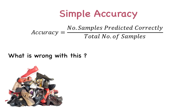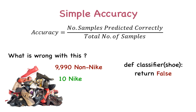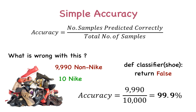Say we have 10,000 shoes that need to be classified as Nike or not Nike. Of these 10,000 shoes, 9,990 of them are not Nike — they may be Adidas, Puma, Airness, or any other brand. Say our classifier was a simple program which basically says, 'Who cares? It's not Nike. Next.' The number of correct predictions will be 9,990, giving us an accuracy of 99.9%. A classifier that does no work gets an accuracy of 99.9% — this is misleading.